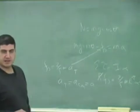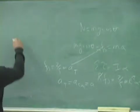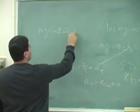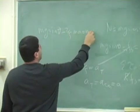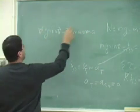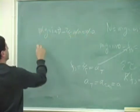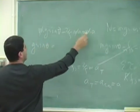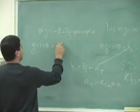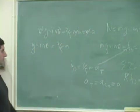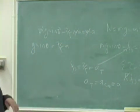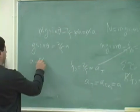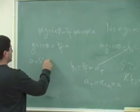Fs, okay? So I'm going to have Mg sine theta minus 2 fifths MA is equal to MA. And then the M and the M and the M cancel. 2 fifths A goes over there. So you have G sine theta is equal to 5 fifths, that's going to be 7 fifths A.